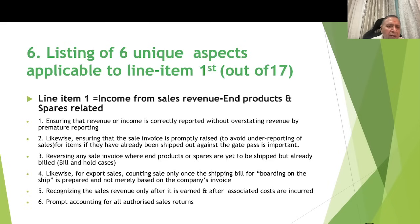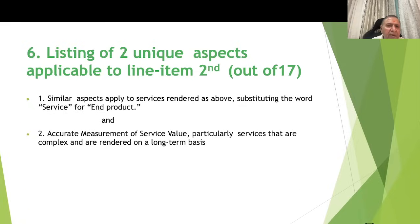For line item 2 — income from sales revenue, services — the concepts from points one to six for products and spares are similarly applicable. The additional unique point is accurate measurement of the value of services rendered, particularly for complex and long-term services — for example, consulting services rendered by the company.